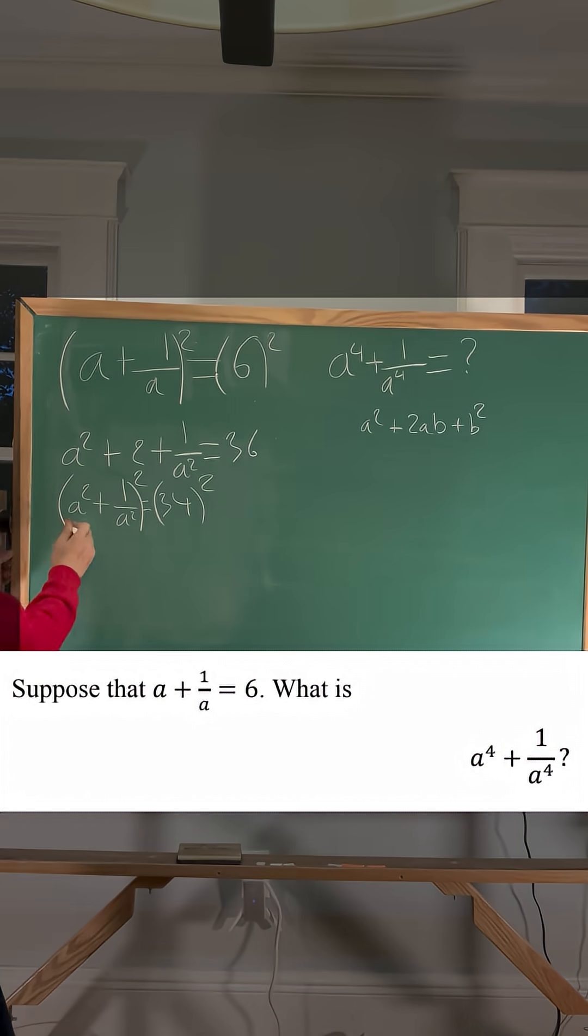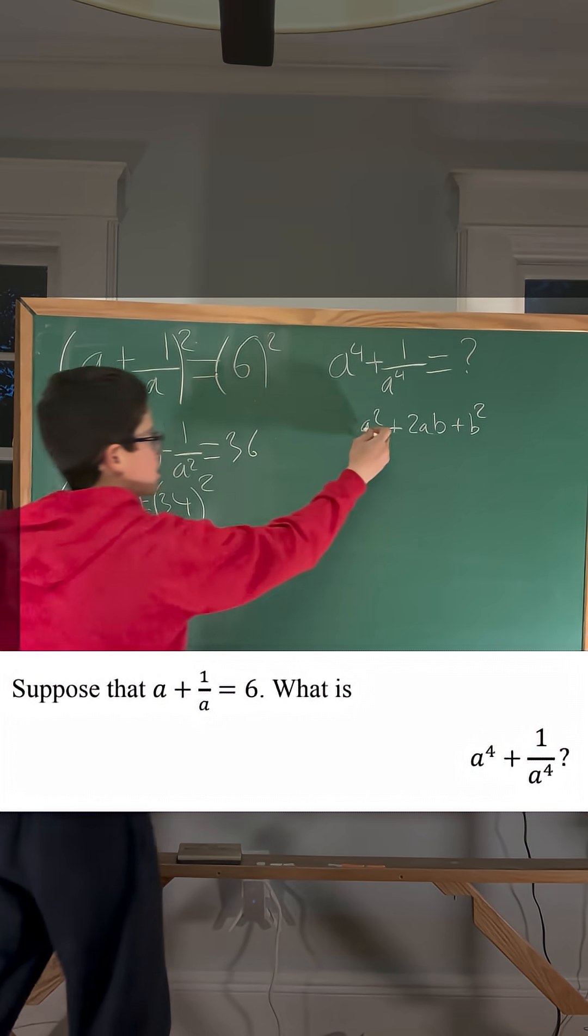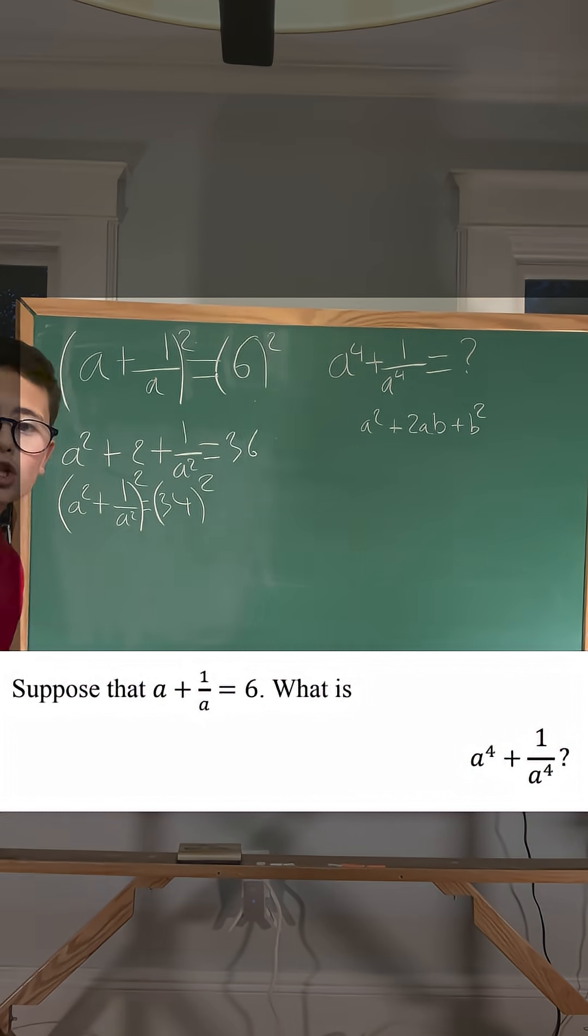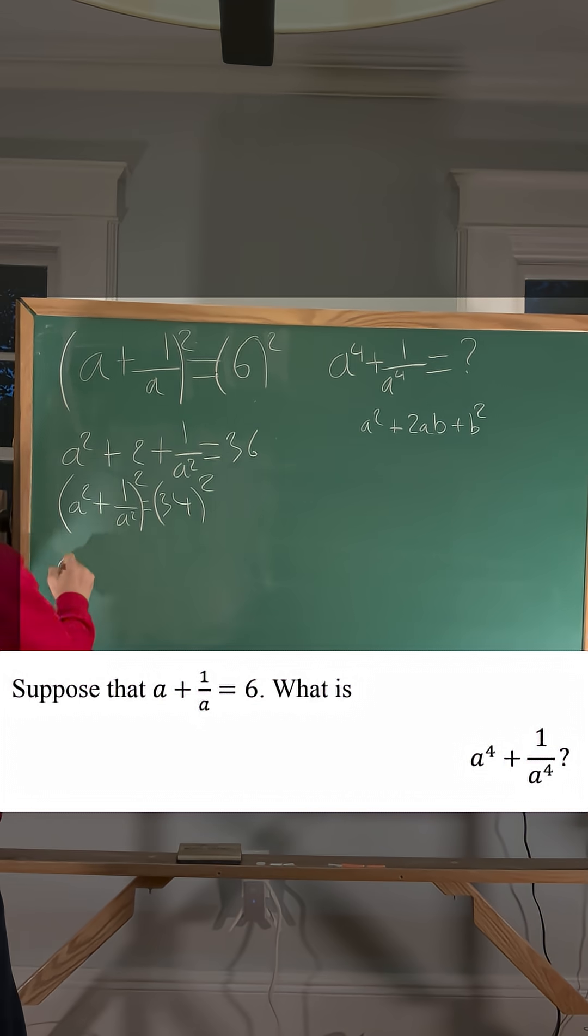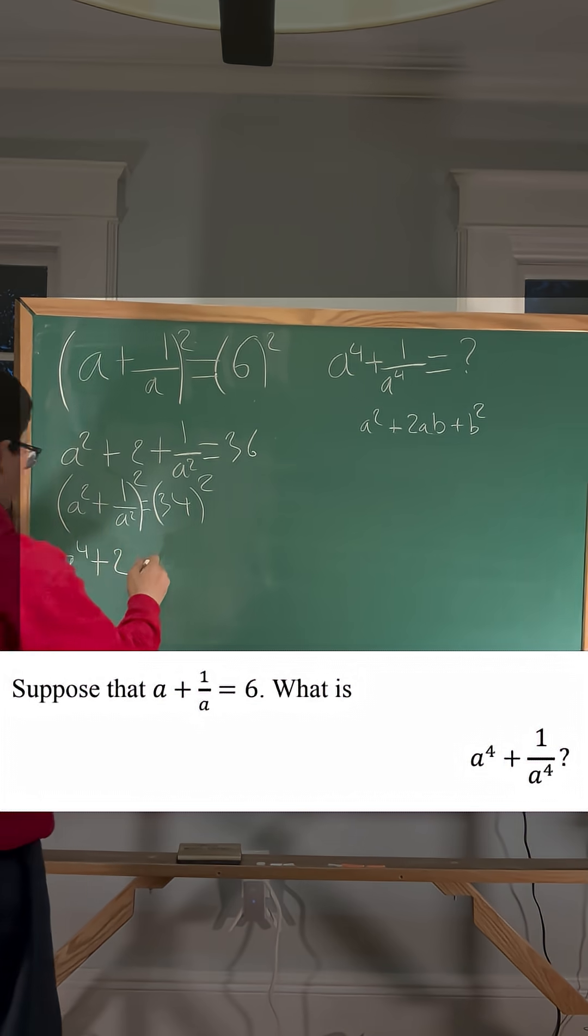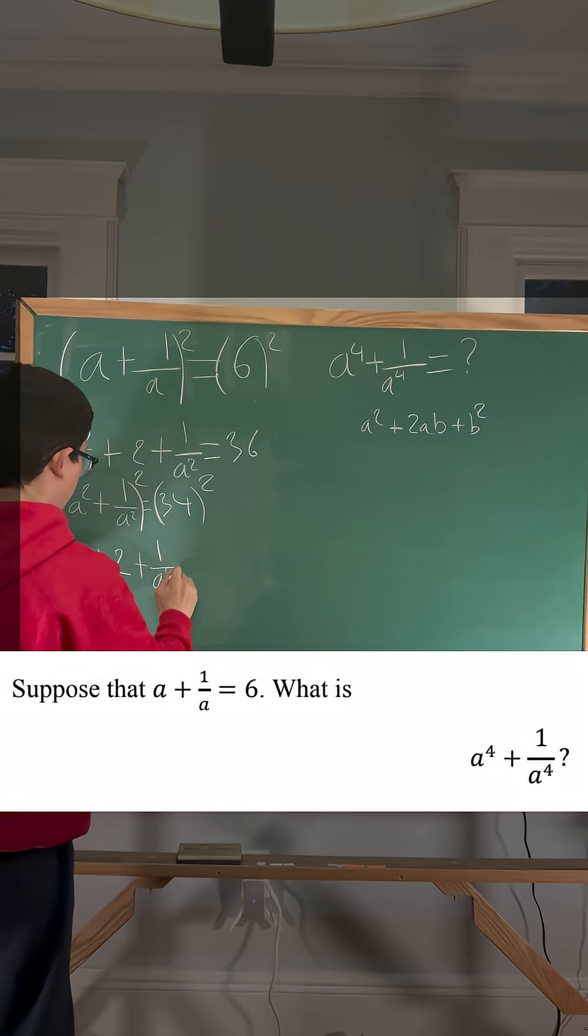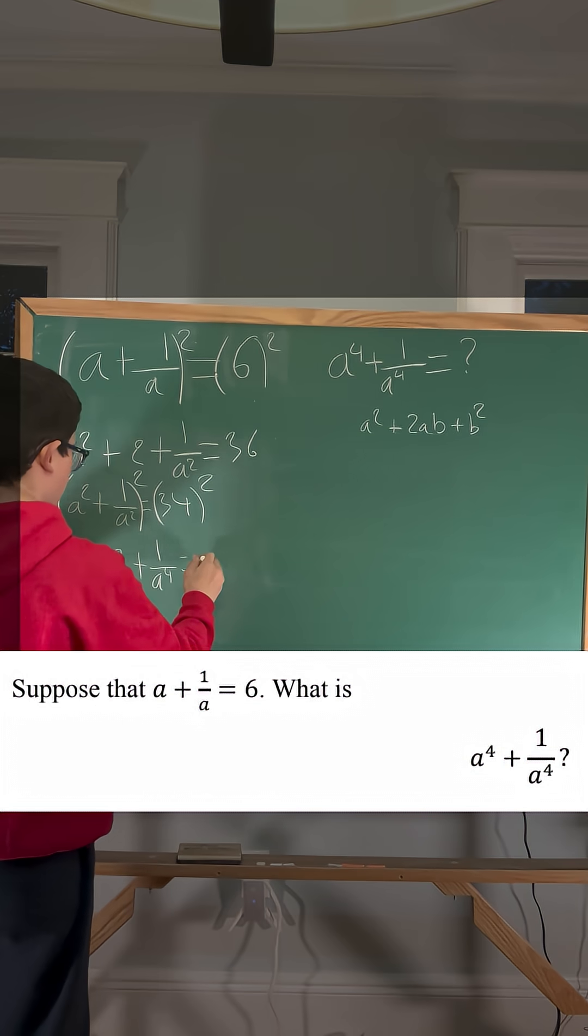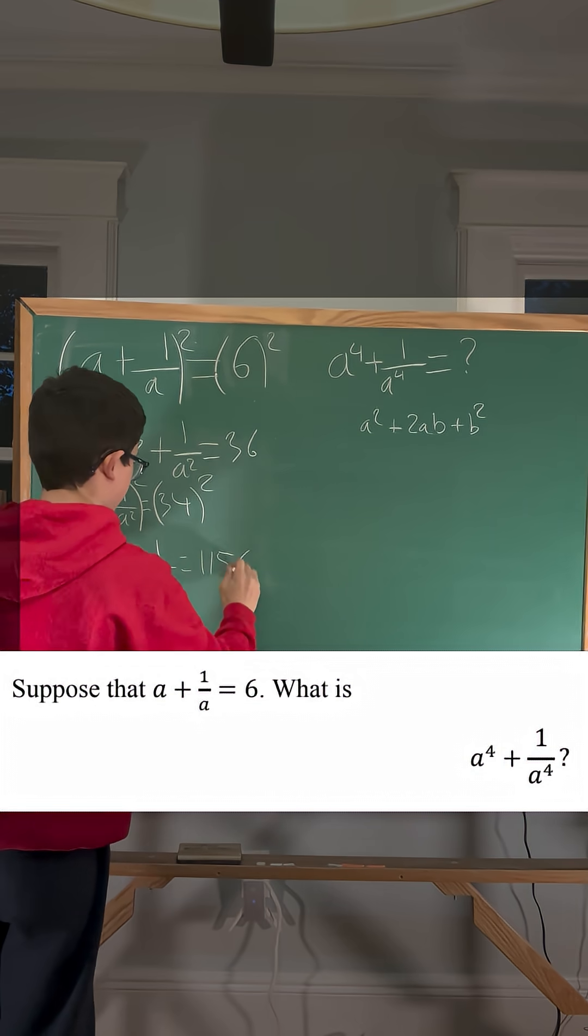This a plus b squared is still this a squared plus 2ab plus b squared. So we could do a to the 4th plus 2, like this one, plus 1 over a to the 4th, equals 34 squared, which is 1,156.